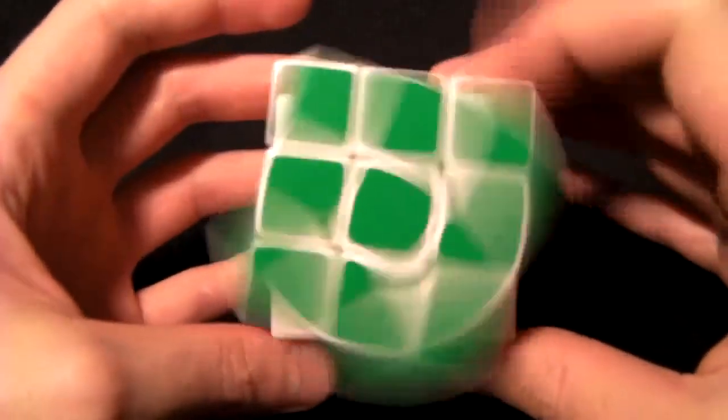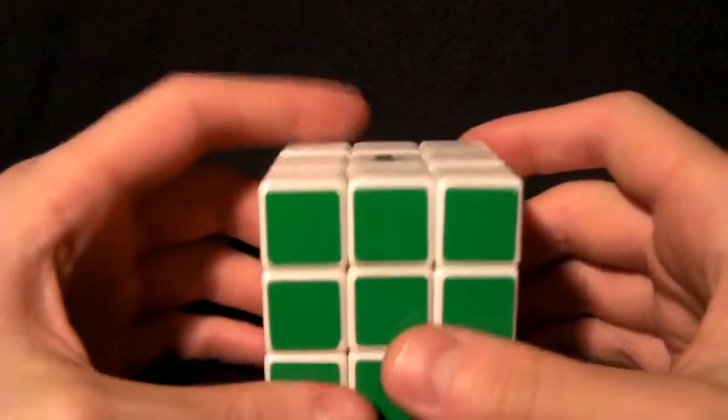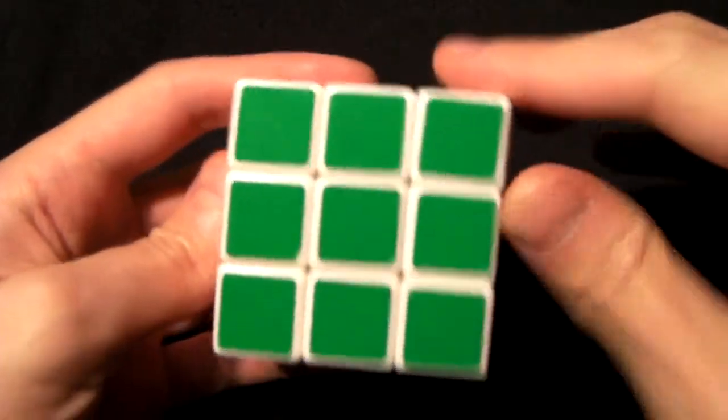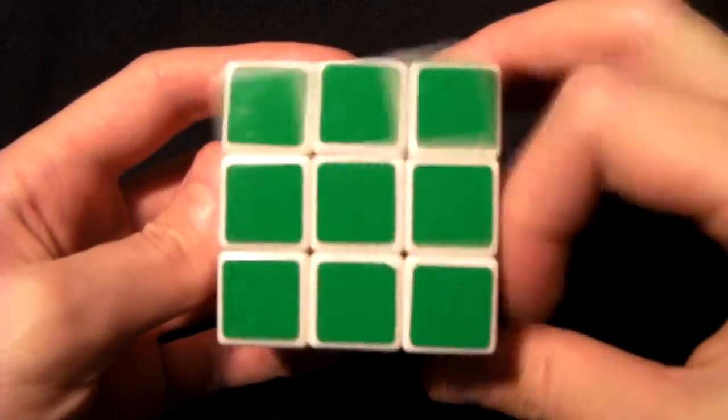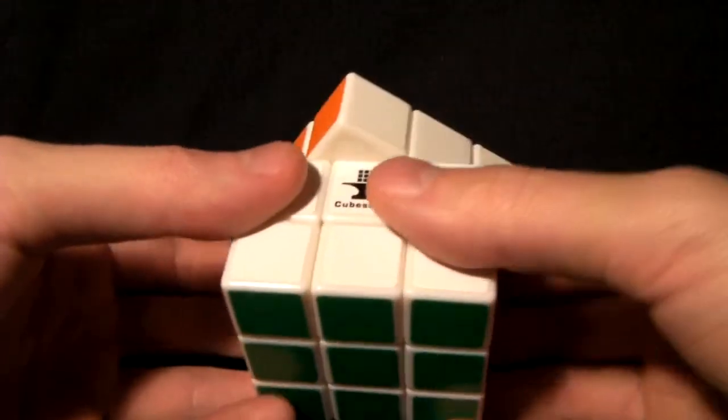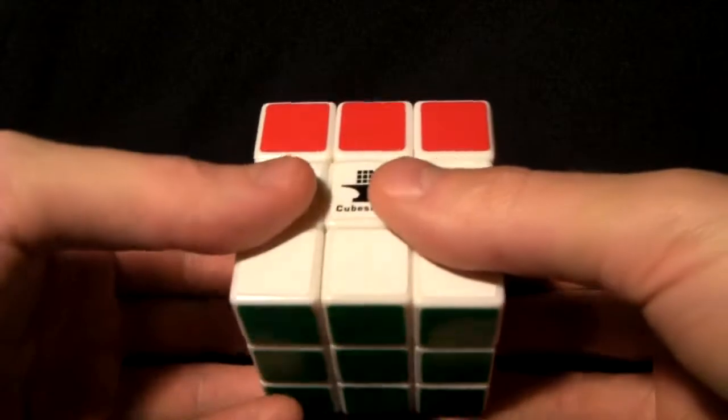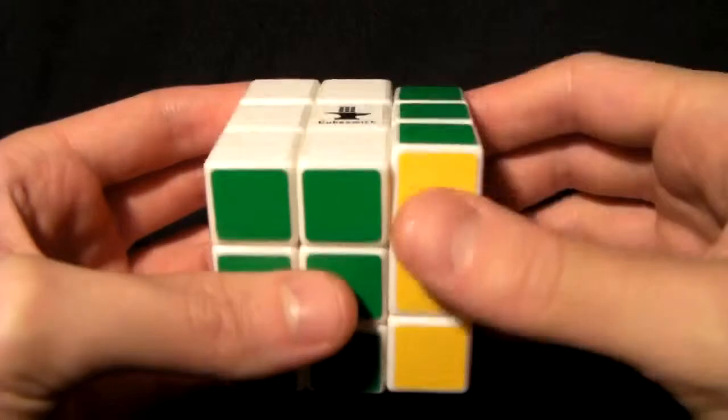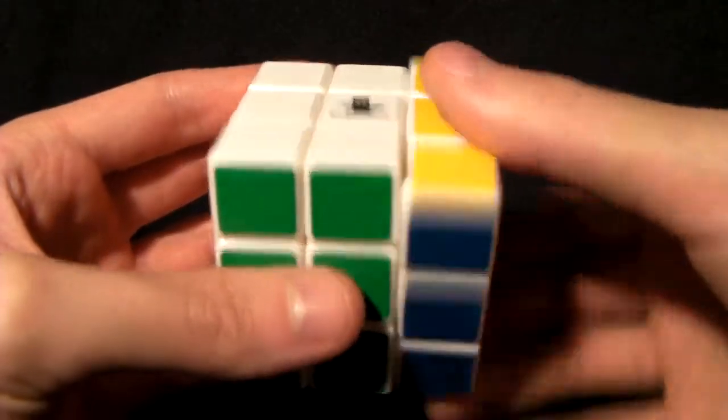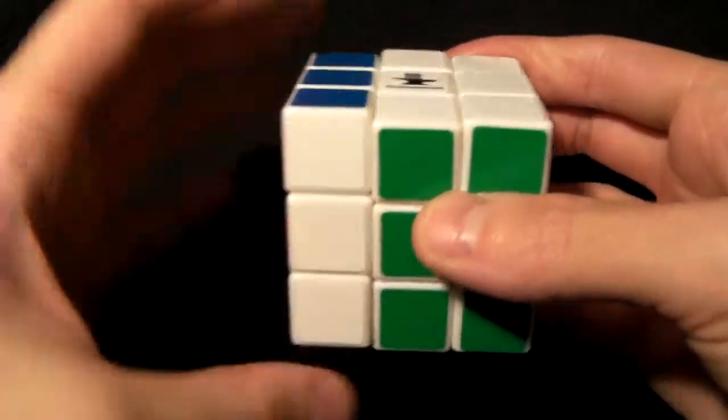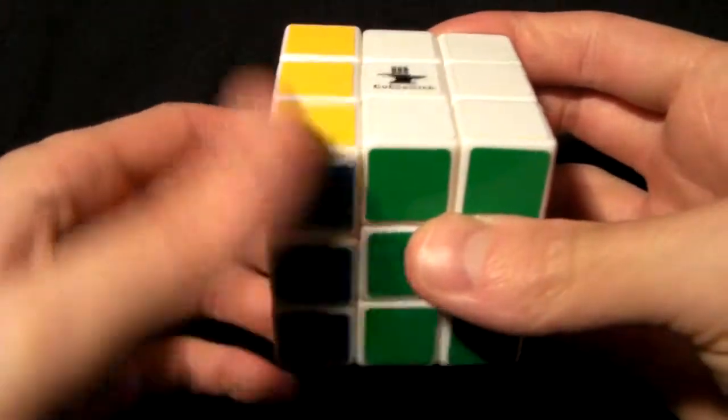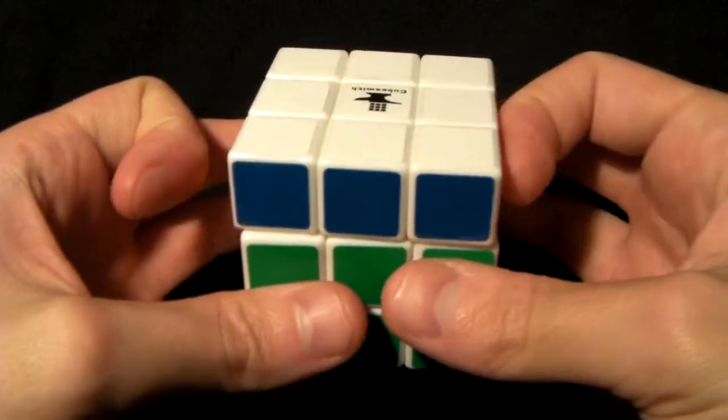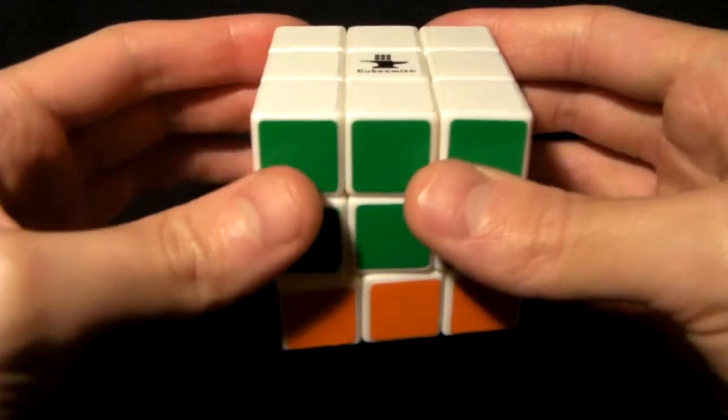So to review for a single layer, we have F, F prime, F2, B, B prime, B2, R, R prime, R2, L, L prime, L2, U, U prime, U2, D, D prime, D2. That's it for a single layer.